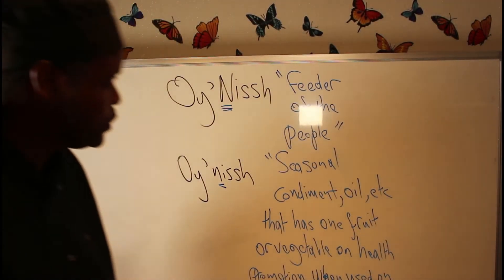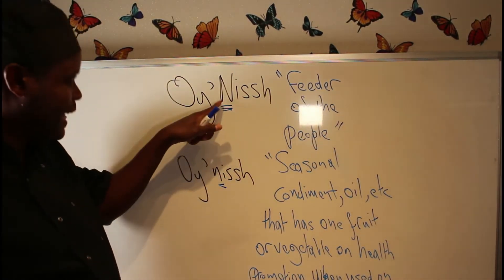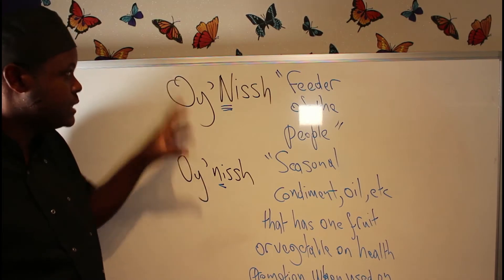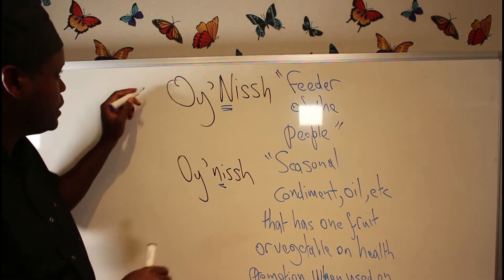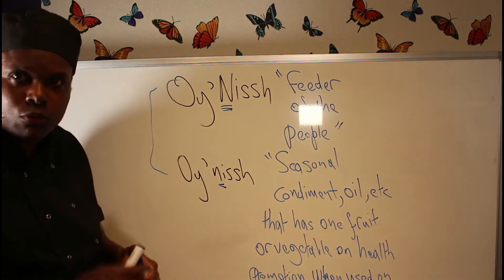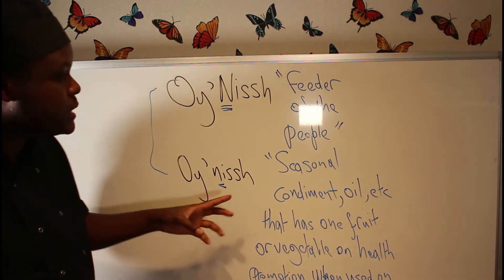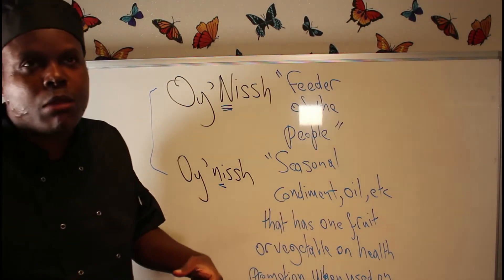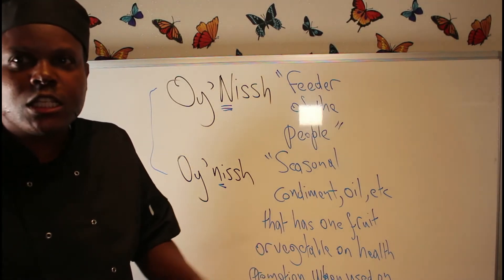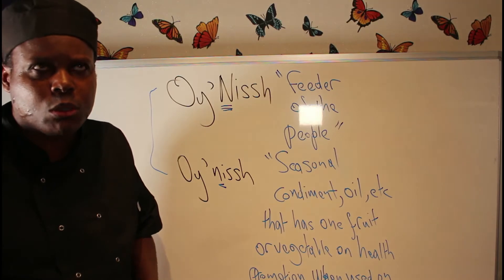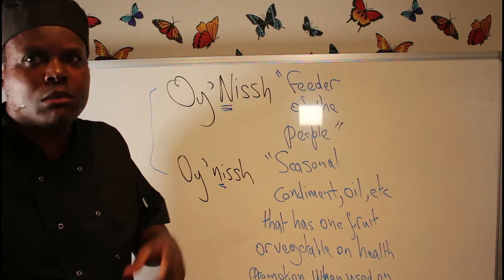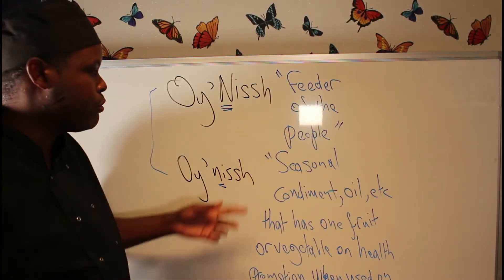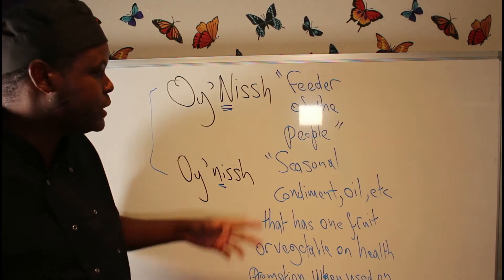So Oynish with a capital N means Feeder of the People, but with a common N it's still classed as part of my name, but when it relates to food and food preparation, it's a seasonal condiment - salt, oil, or anything that would probably fall under the trademark classification system, class 29, when it talks about sauces, relishes, etc. It has to do with seasoning in general, but condiments.